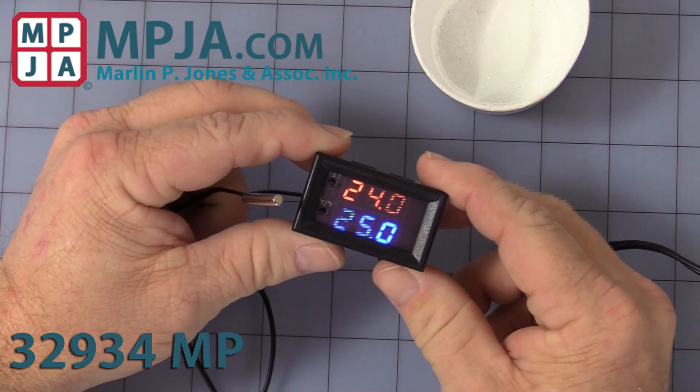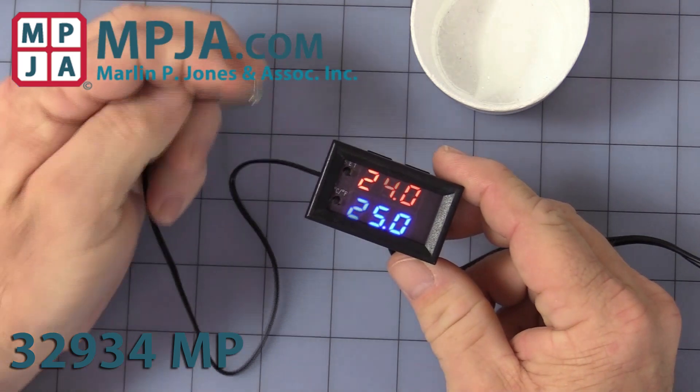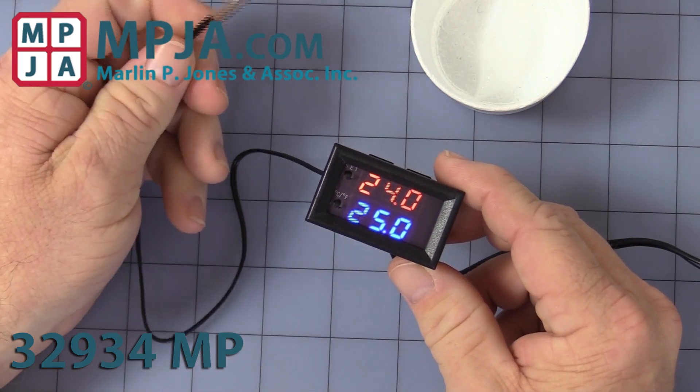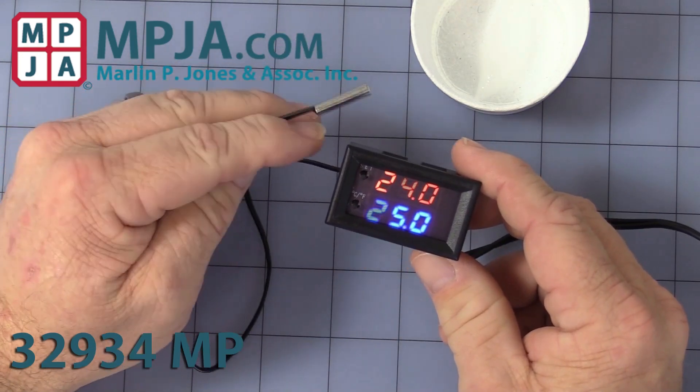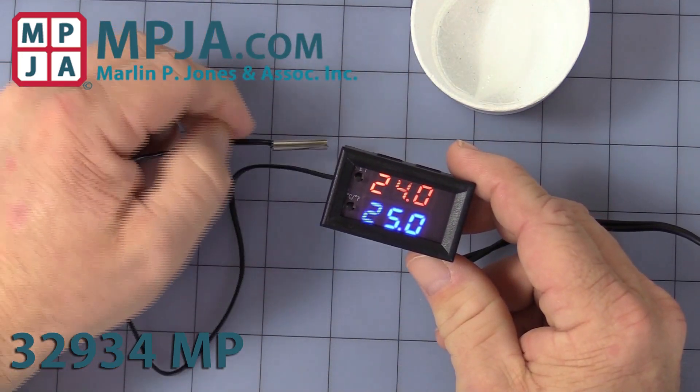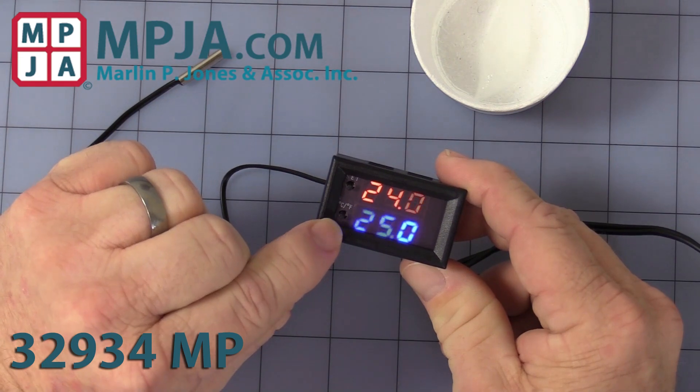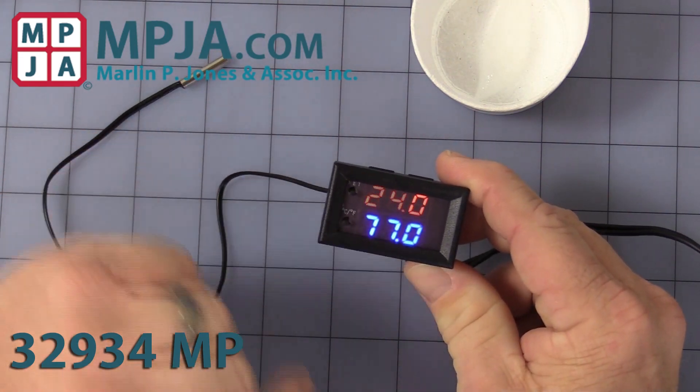But right now it's in Celsius. And I personally prefer Fahrenheit. So, you press the CF button once, and it will change the unit to display Fahrenheit. There we go, converted to Fahrenheit.